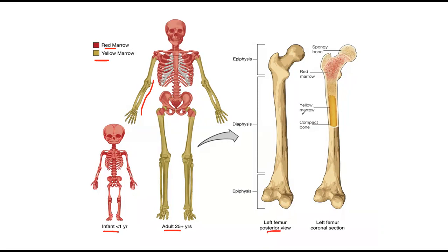In the femur, you can see yellow bone marrow and red bone marrow. The red bone marrow is present in the ribs and the pelvic region, and also in the femur. Yellow bone marrow is present mainly in the tibia, femur, and bones of the hands. Importantly, a single bone can consist of both red and yellow bone marrow.